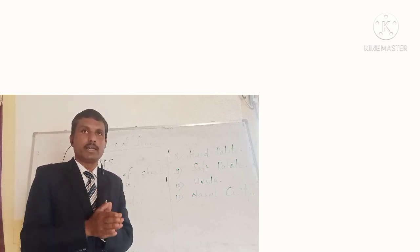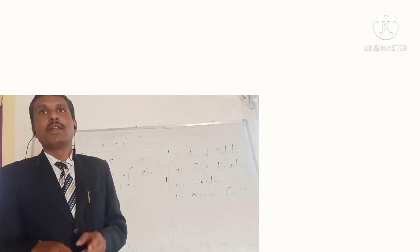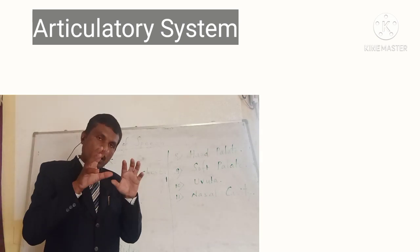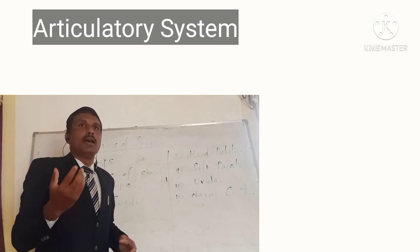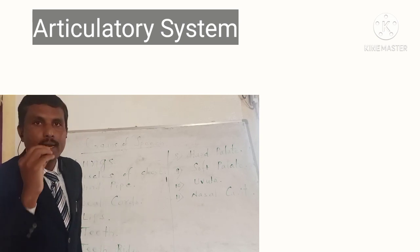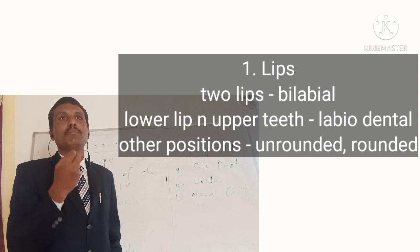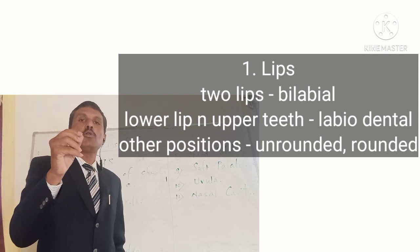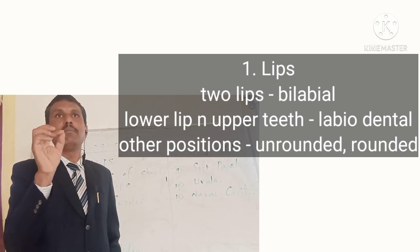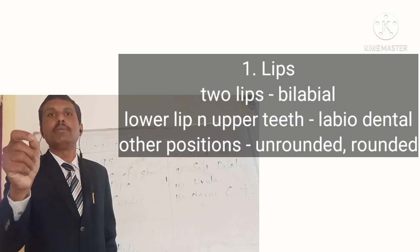The articulatory system is studied from the lips to the uvula. There are certain sounds produced with the help of lips. Some are produced with the help of both lips; some with the help of one lip and the teeth. Sounds produced with the help of lips are called labial sounds. 'Labial' is the adjective for lips.